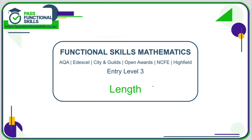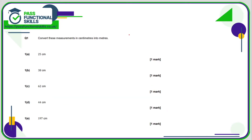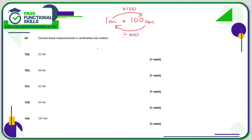Let's take a look at length. For this set of questions we need to convert from centimeters into meters. One meter equals 100 centimeters, so if you're converting from meters into centimeters you're multiplying by 100, and if you're going from centimeters into meters you are dividing by 100.